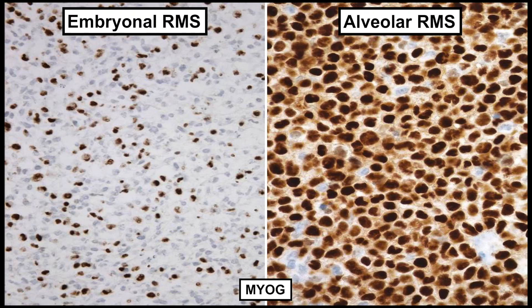The extent of staining for myogenin can be a helpful clue to separate embryonal from alveolar rhabdomyosarcoma, especially in limited biopsy samples. Alveolar rhabdomyosarcoma almost always shows very strong diffuse staining in nearly every nucleus, whereas embryonal rhabdomyosarcoma often shows more limited staining of the tumor cell nuclei, somewhere between 20 and 60 percent of the nuclei.